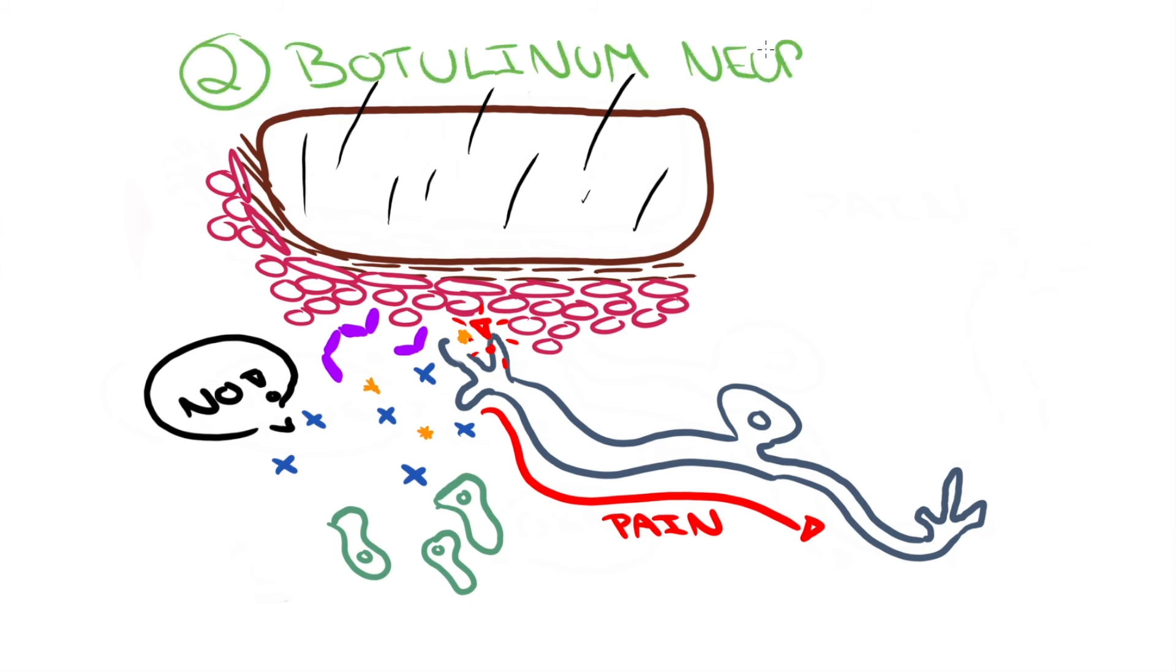The second treatment uses botulinum neurotoxin, which prevents the injured neurons from releasing CGRP in the first place. Botulinum neurotoxin is a protein used for cosmetic procedures, bladder dysfunction, and also for treating migraines.